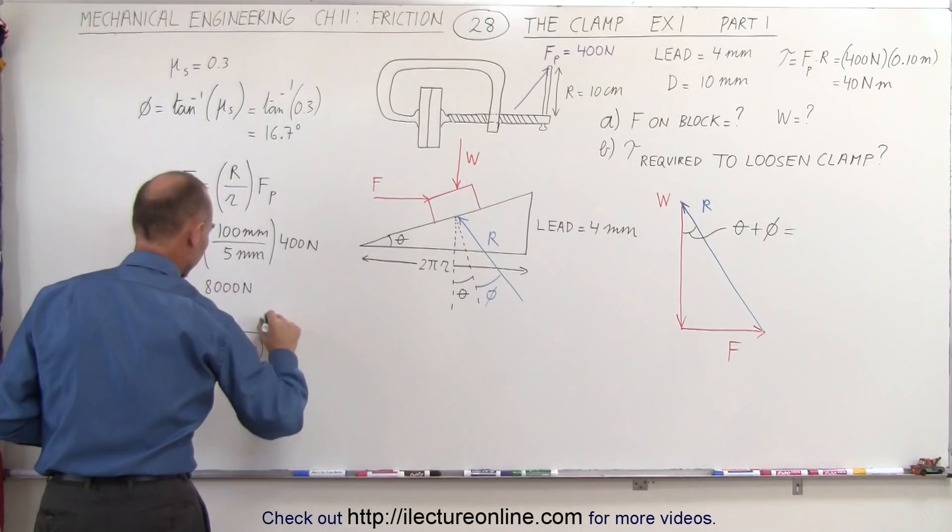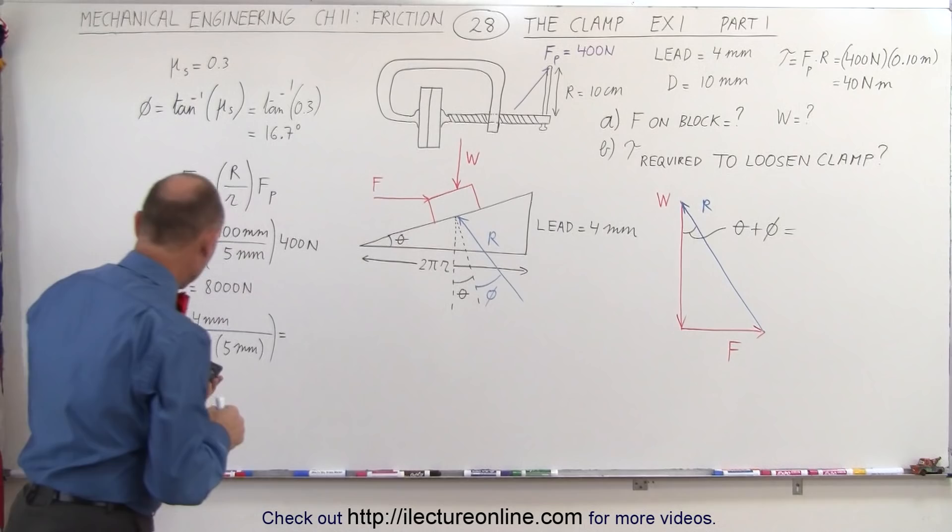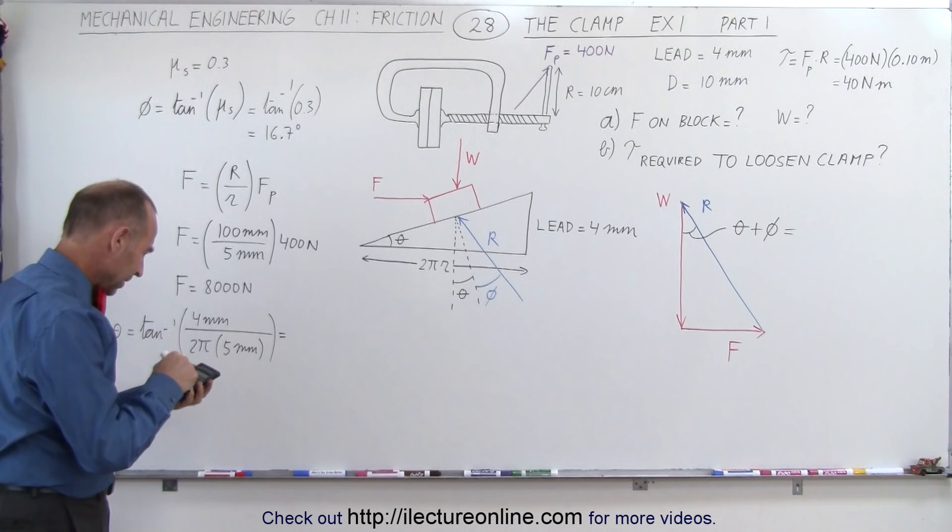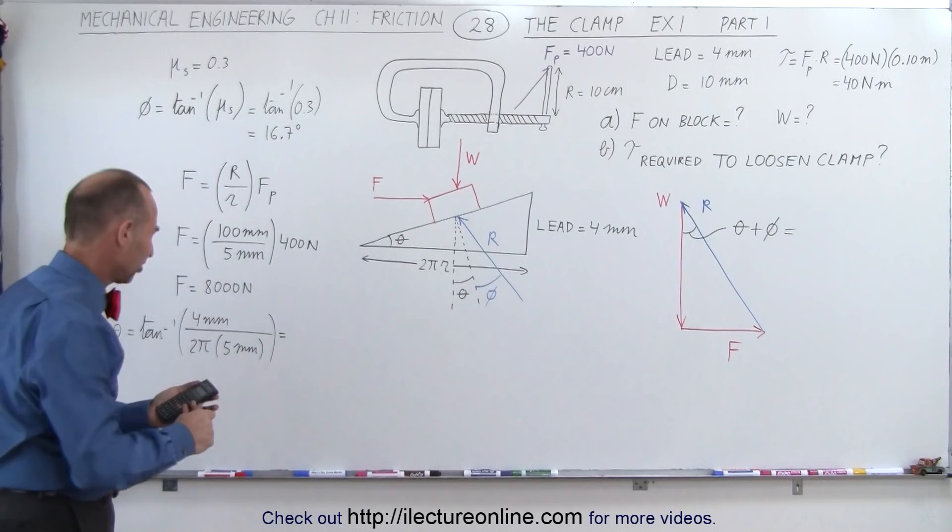And let's take the arc tangent of that. So we get 4 divided by 2 divided by pi divided by 5. Then we take the arc tangent of that and we get 7.26 degrees. Close enough. 7.26 degrees.